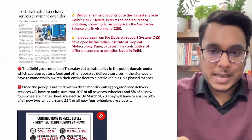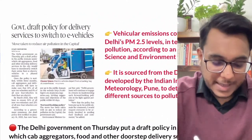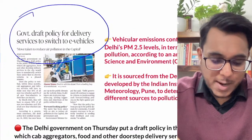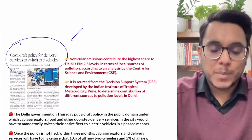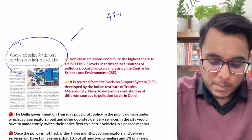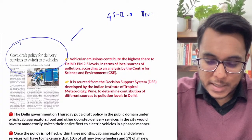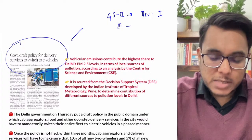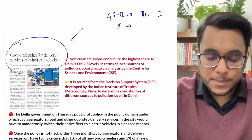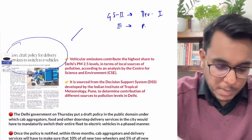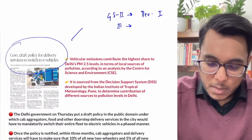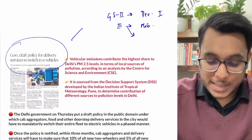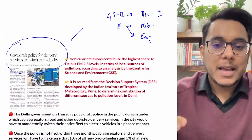The first article is 'Government Draft Policy for Delivery Services to Switch to E-Vehicles.' This article will be important in GS Paper 2 — developmental issues and government schemes — as well as GS Paper 3 — public mobility and environment.